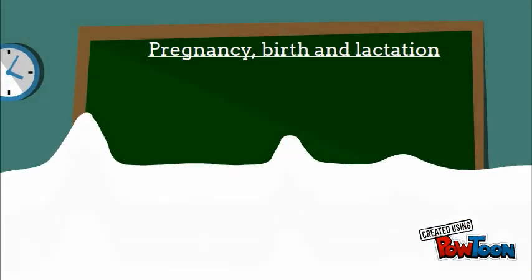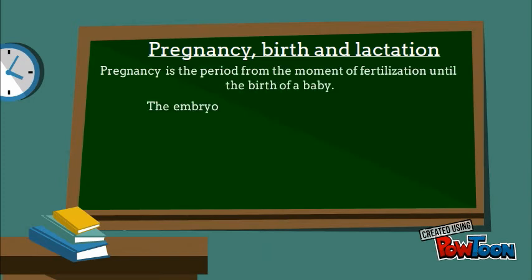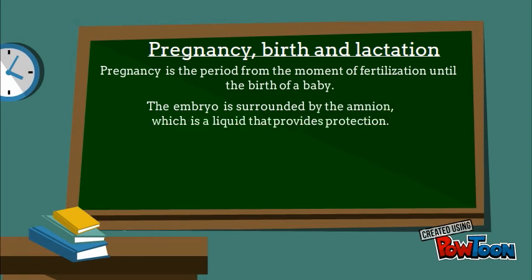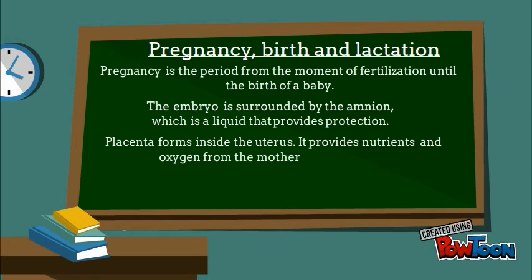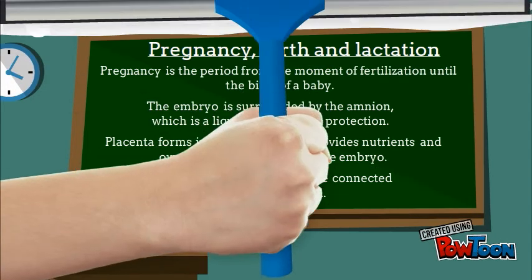Pregnancy is the period from the moment of fertilization until the birth of a baby. The embryo is surrounded by the amnion, which is a liquid that provides protection. The placenta forms inside the uterus and provides nutrients and oxygen from the mother to the embryo. The embryo and the placenta are connected by the umbilical cord.